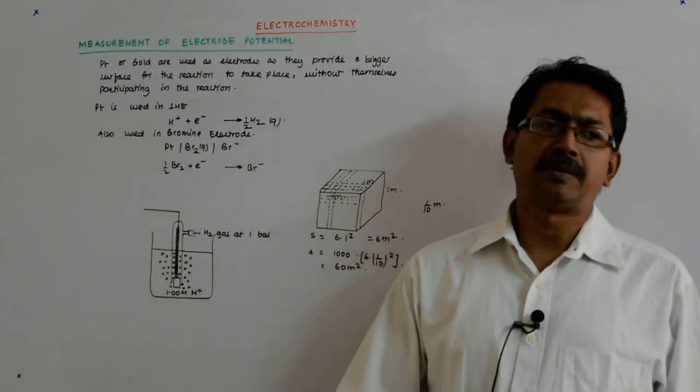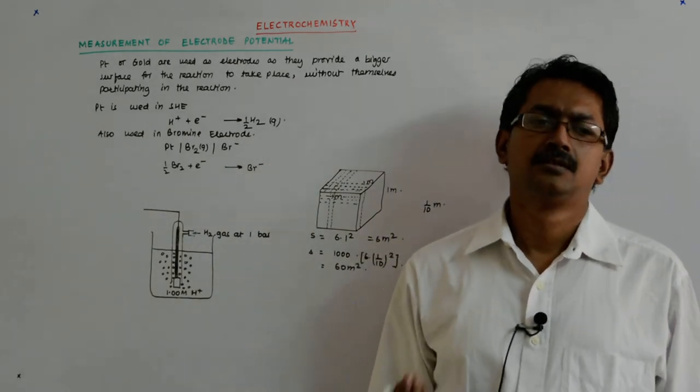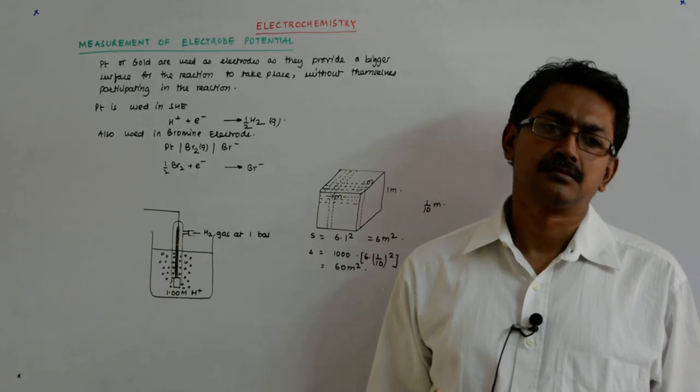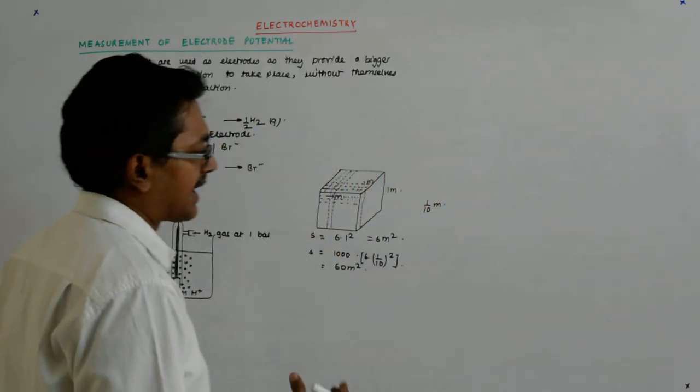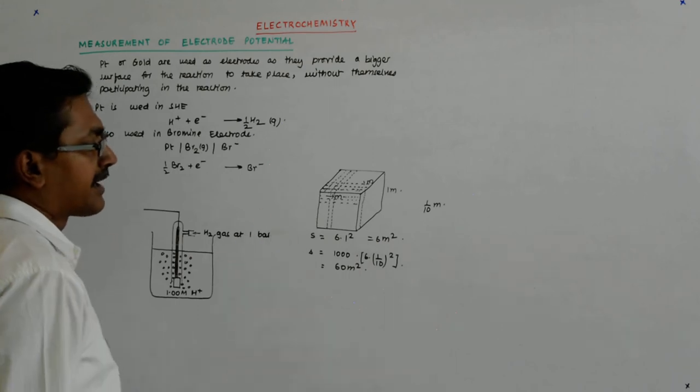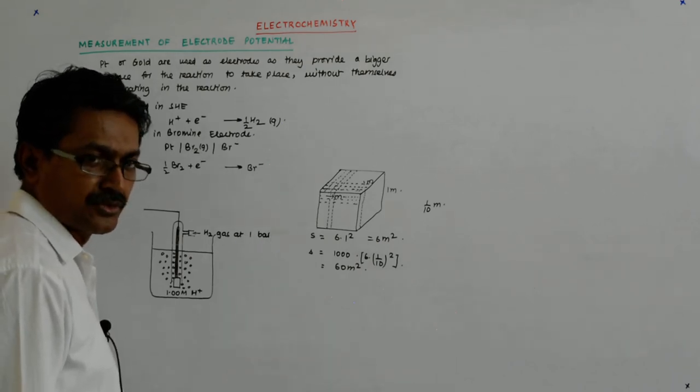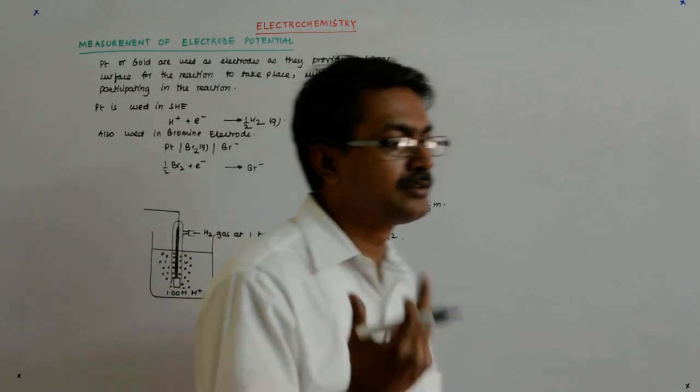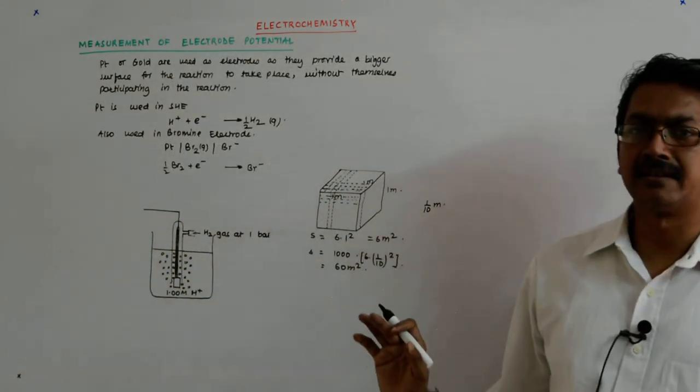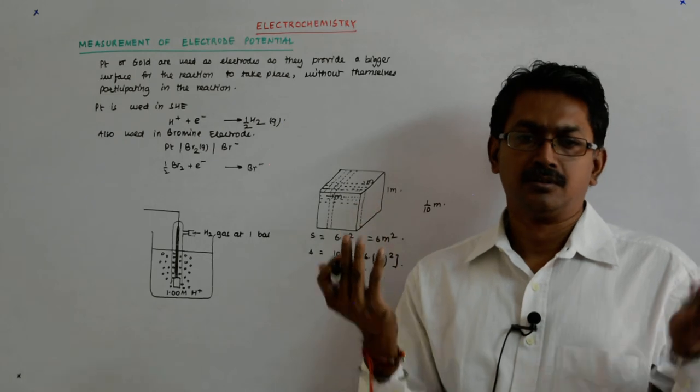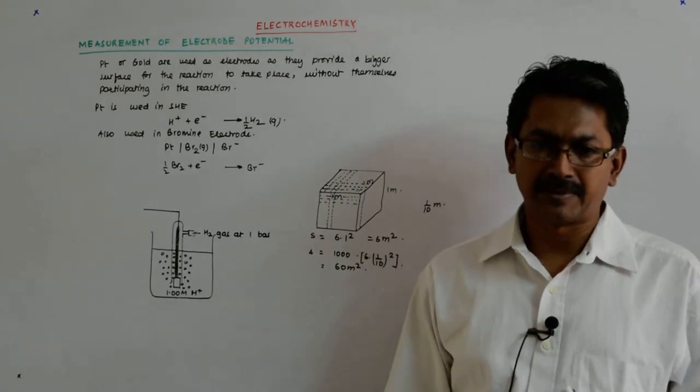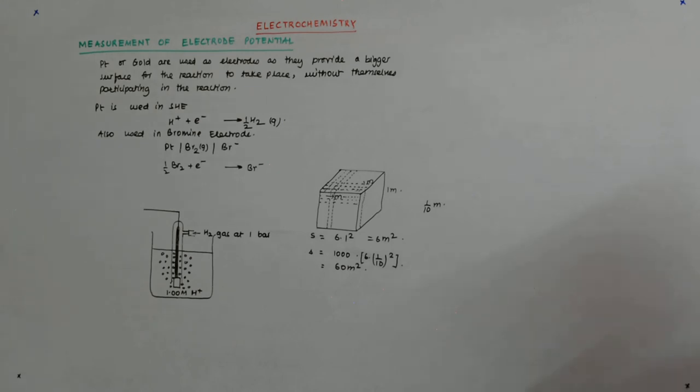That's why when you use the powdered form of something, the surface area goes up and the reaction rate also goes up. Many a times you'll find some powdered copper being put in and suddenly the reaction which was not proceeding suddenly picks up. That is called the catalyst, because catalyst is something that actually does not participate in the reaction but somehow it still accelerates the reaction.